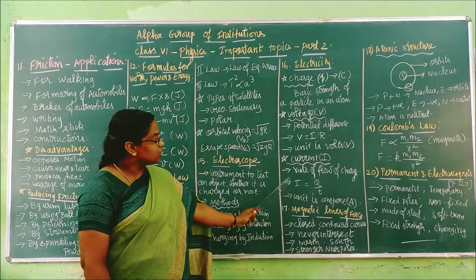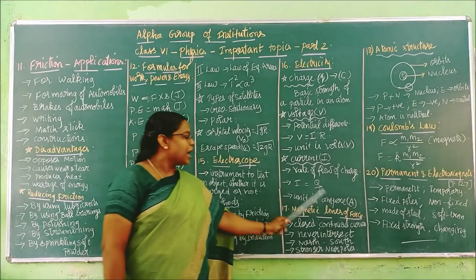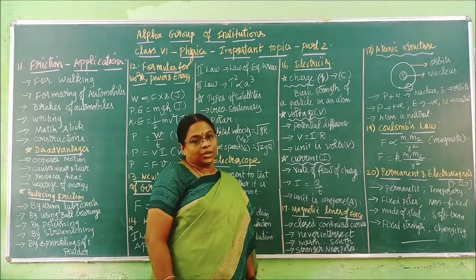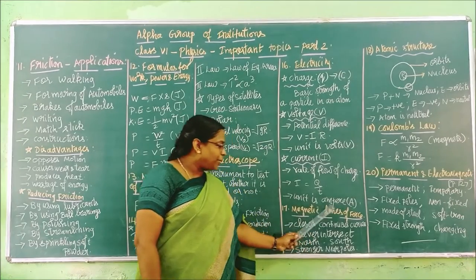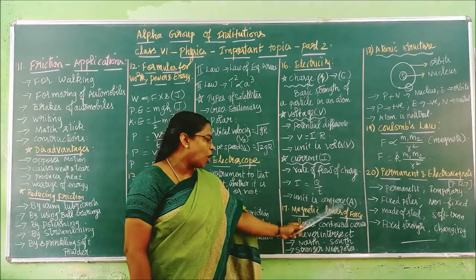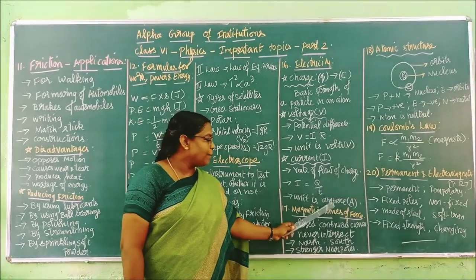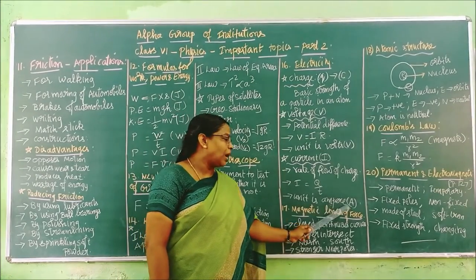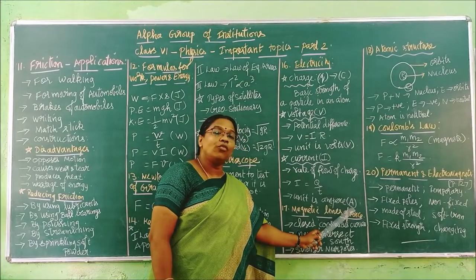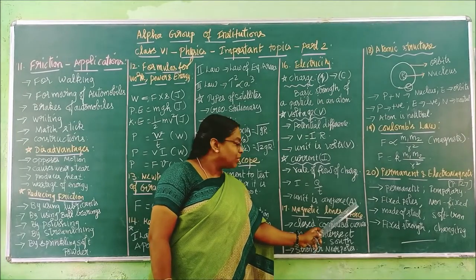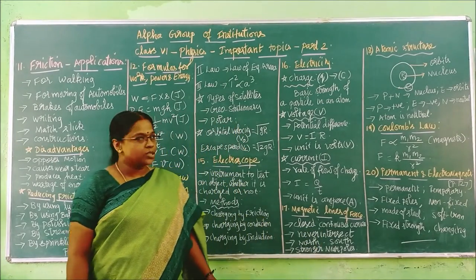The unit of current is ampere (A-M-P-E-R-E), and its symbol is capital A.